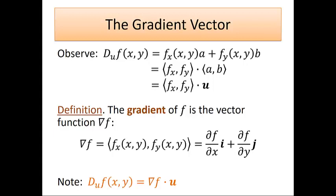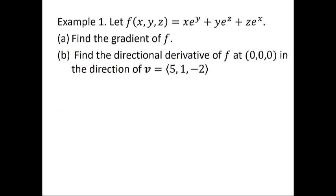Let's see that in action. We have the function f = xe^y + ye^z + ze^x. We're going to first find the gradient of f, and then use that to find the directional derivative of f at the origin in the direction of the vector (5, 1, −2).